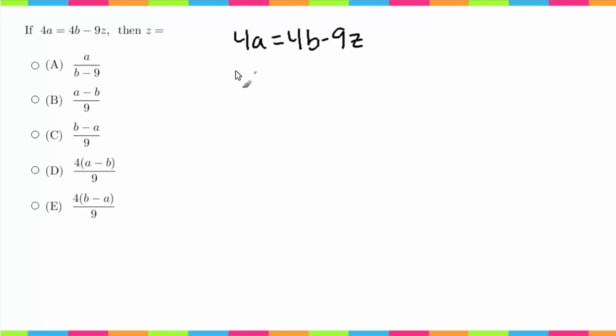I'm going to bring the 9z over to the left just because I like to have that positive. So then I'll add 9z to both sides plus 9z. So we get 9z plus 4a equals 4b.